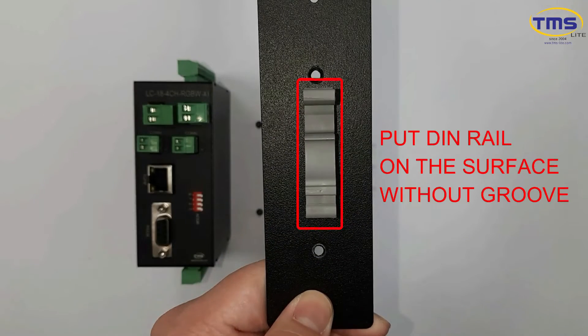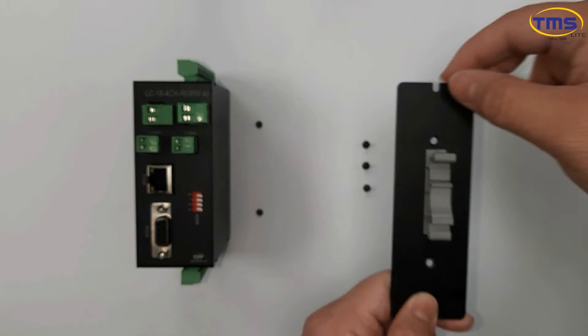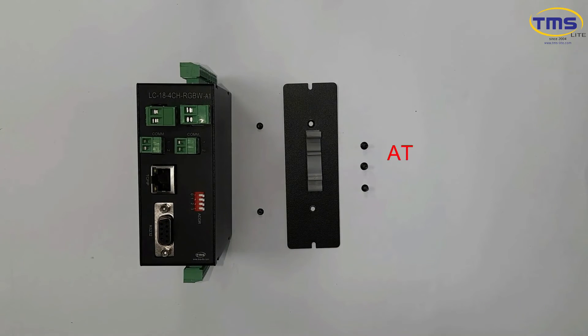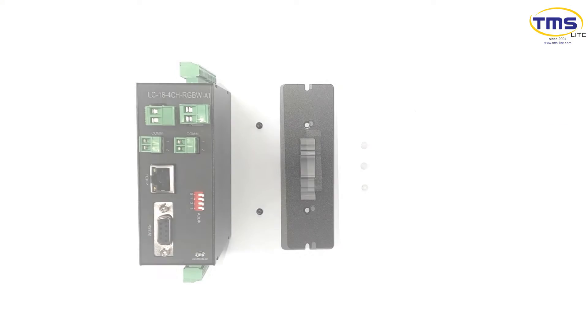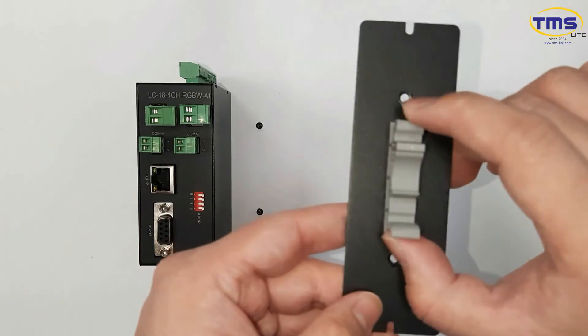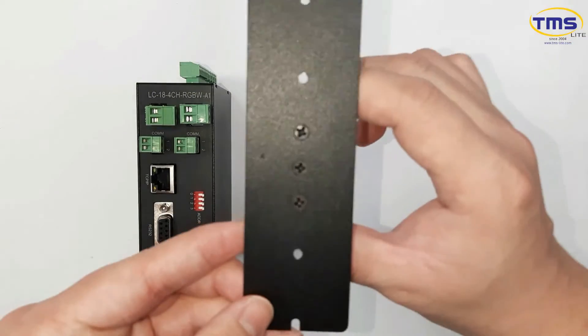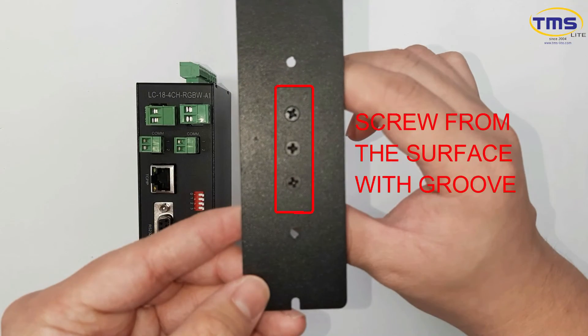Then, place the DIN rail on the surface without groove. Align the hole and screw the DIN rail with the backplate from the surface with groove.